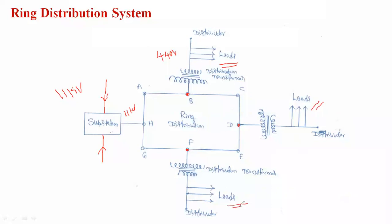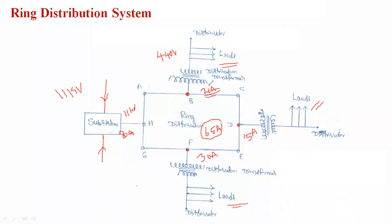The advantages of the ring distribution system: voltage fluctuation is less at the consumer end because the load is shared. For example, in the particular line, if the load in distributor B is 20 ampere, distributor D is 15 ampere, and distributor F is 30 ampere — total 65 ampere — and the substation supplies 80 ampere. If the load in one area increases, the remaining distributors D and F share the load with B. That is why the voltage fluctuation is less at the consumer end.